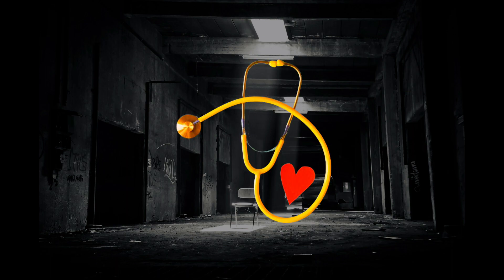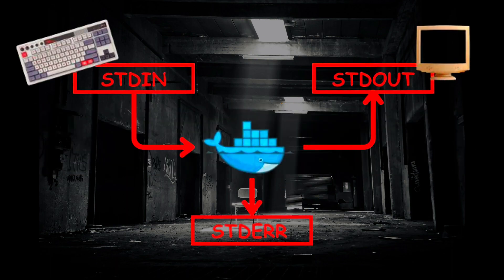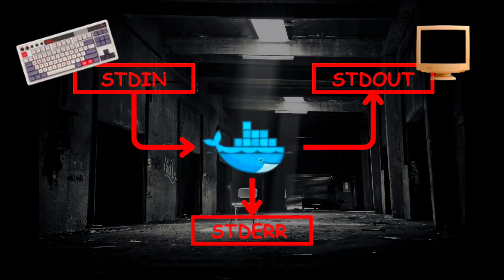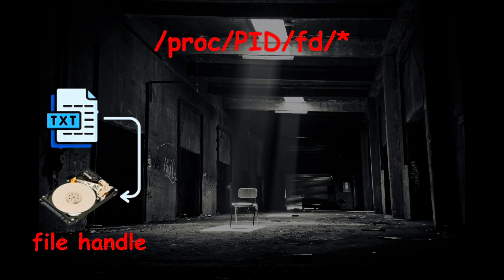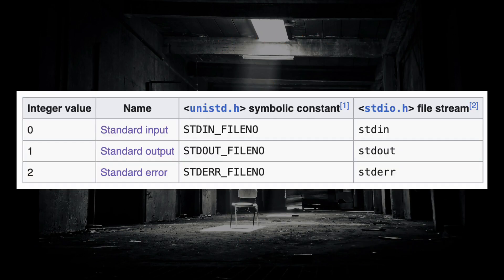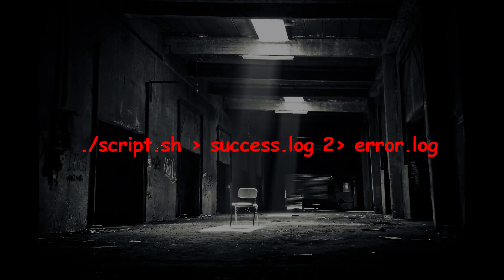The last one is standard error, which is used to get diagnostics or error messages from the program. Now that we know what the standard streams are, how do we represent them as files for access? This is where Linux file descriptors come into the picture. A file descriptor is a representation of a file handle, pipe, or TCP socket. These three numbers correspond to the standard streams, and you can see them in the terminal at this path. You may also access them using redirections, which is our next topic.